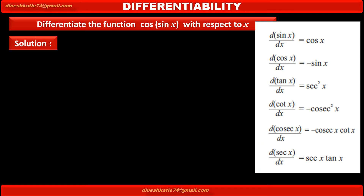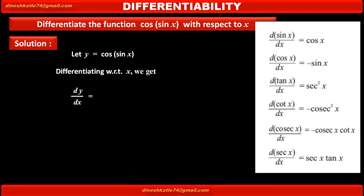Now, see the solution. To solve this problem, let us assume that y is equal to the given function cos of sin x. Differentiating this function with respect to x, we get derivative of y with respect to x. That is, dy by dx is equal to, substituting the value of y, we get derivative of cos of sin x with respect to x.